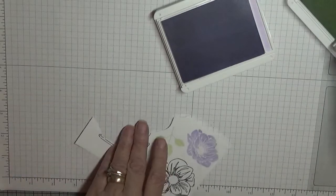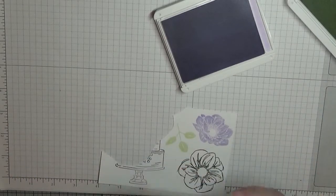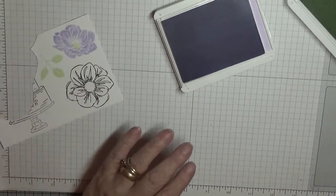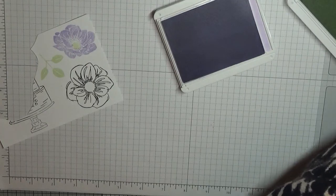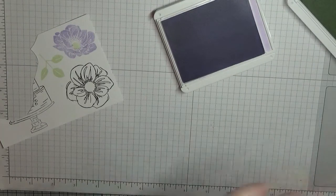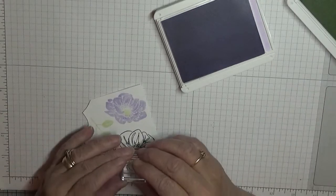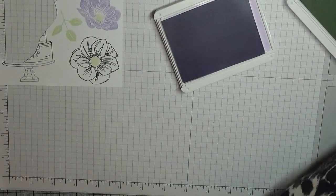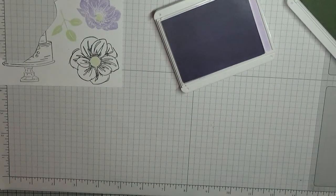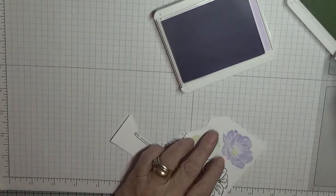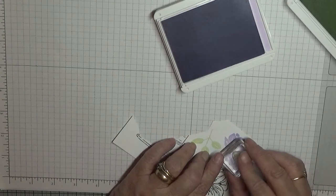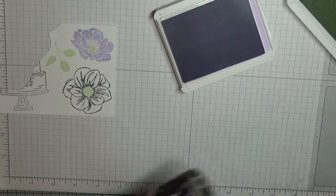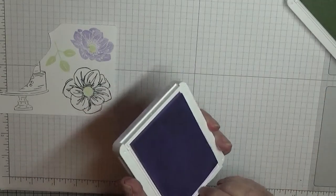Now the infills we're going to do in Soft Sea Foam. Like that. Missed a bit there, but that's all right. And for the big flower, like that. Let's just do that again. That's it. Put all the inks away.